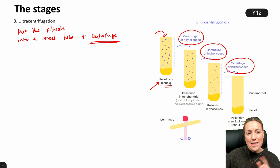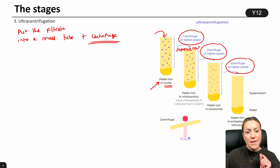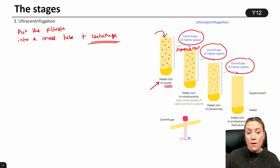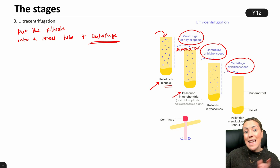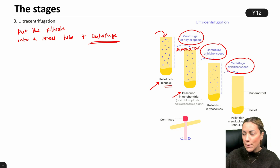You'll get a pellet with the densest organelle first. The densest organelle will be the nucleus — that will be in the first pellet, which forms at the bottom of the tube. You then pour what we call the supernatant, which is the liquid part that still remains, into the second tube, centrifuge it at a higher speed, and you'll get another pellet containing the next densest organelle. Repeat the process: pour off the supernatant, centrifuge at a slightly higher speed, and keep repeating.